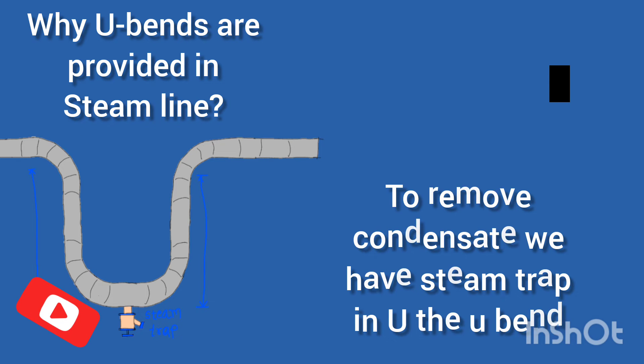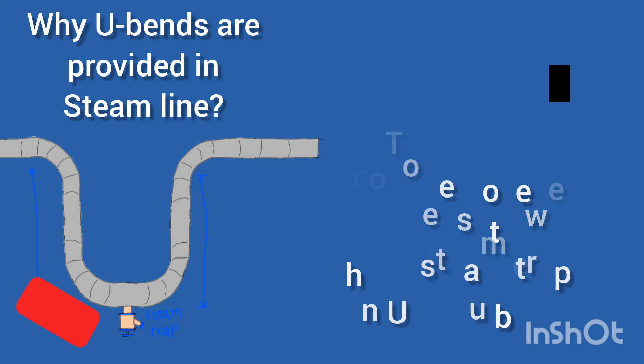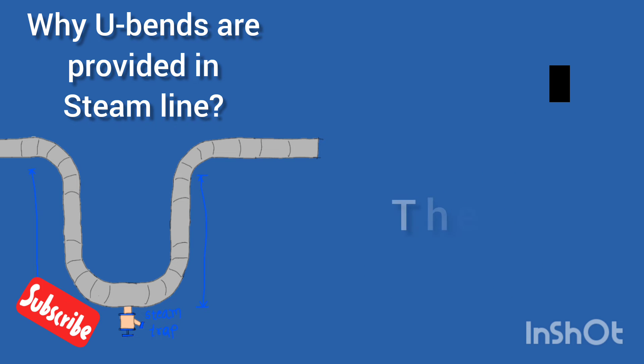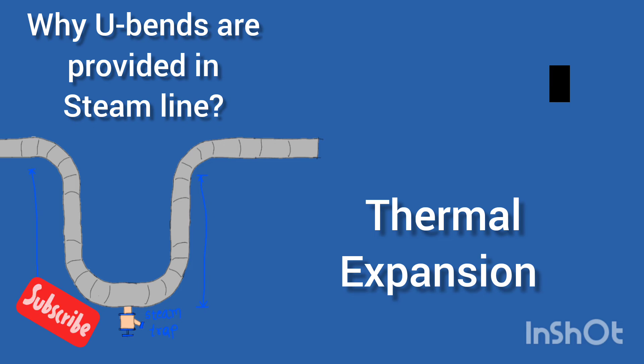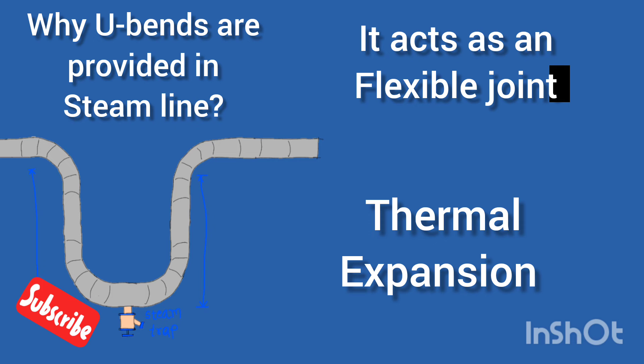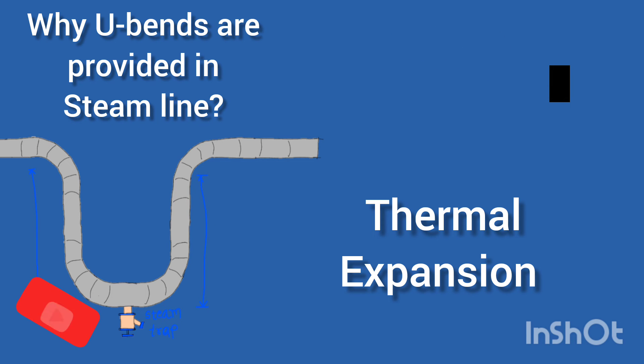Another reason is that U-bends play a crucial role in handling thermal expansion, preventing stress and strain on the steam line. They act as flexible joints allowing the pipe to expand or contract without causing damage.